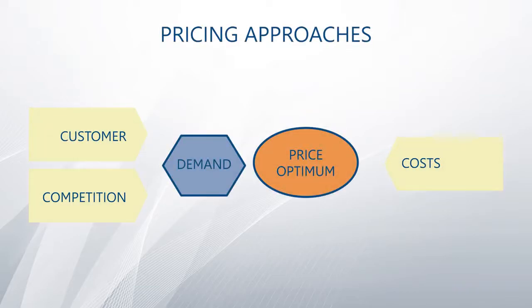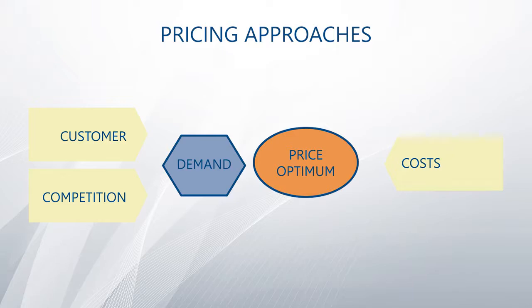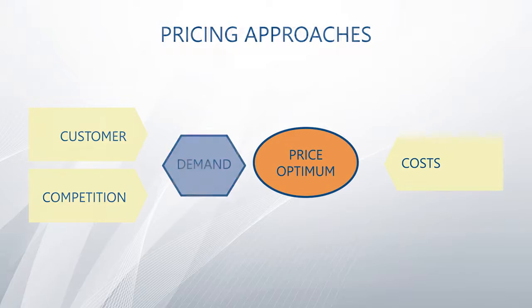Generally speaking we can distinguish three different approaches to price setting — two of them being external in nature while one of them being internal in nature. The internal price setting approach is typically called cost-based pricing or cost-plus pricing. What we essentially are doing is we use the information about the cost structure of an organization in order to set the prices.